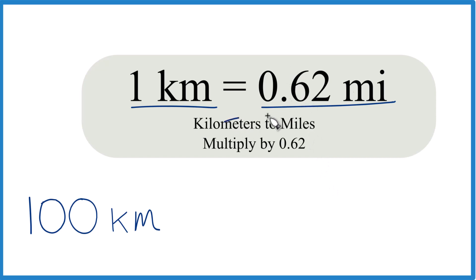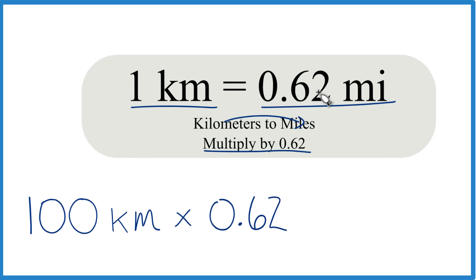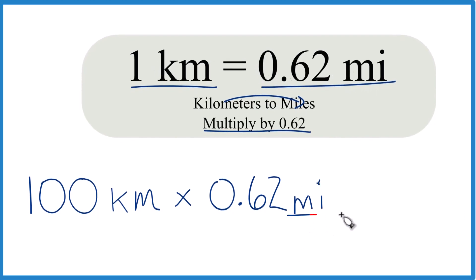We're going from kilometers to miles, we'll multiply by 0.62. So we have 100 kilometers multiplied by 0.62, and that's 0.62 miles in one kilometer, so per kilometer.